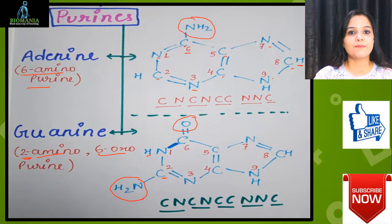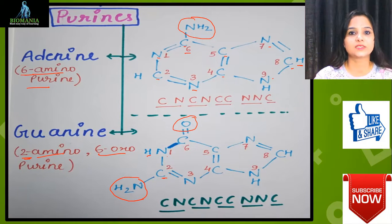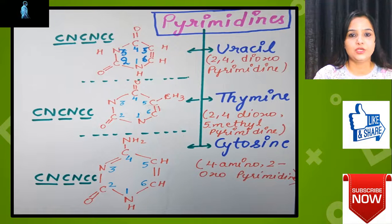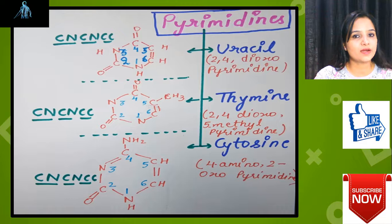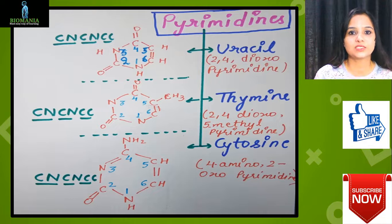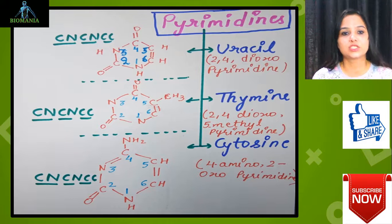Let's move towards the pyrimidines. It has three nitrogenous bases: uracil, thymine, and cytosine. Uracil is present in RNA and thymine is present in DNA, so here you can see the difference between uracil and thymine.